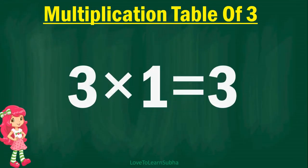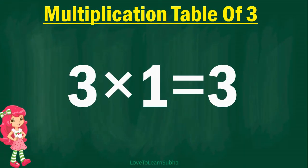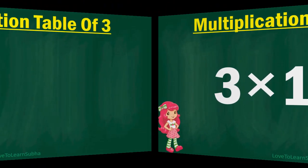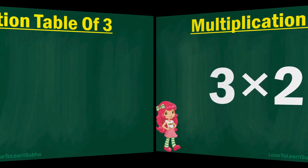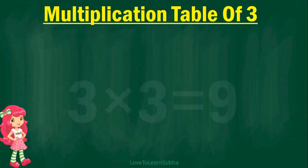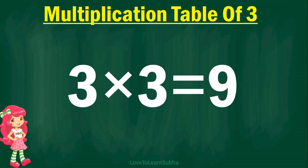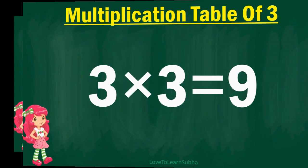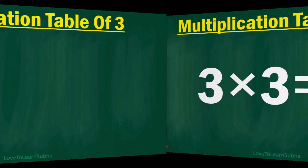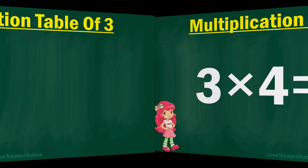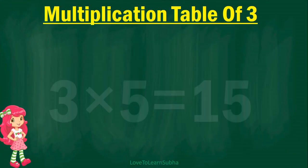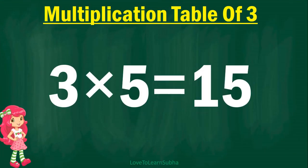3 1s are 3, 3 2s are 6, 3 3s are 9, 3 4s are 12, 3 5s are 15,